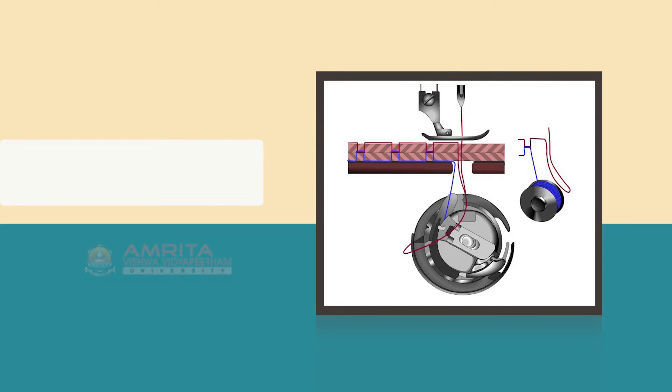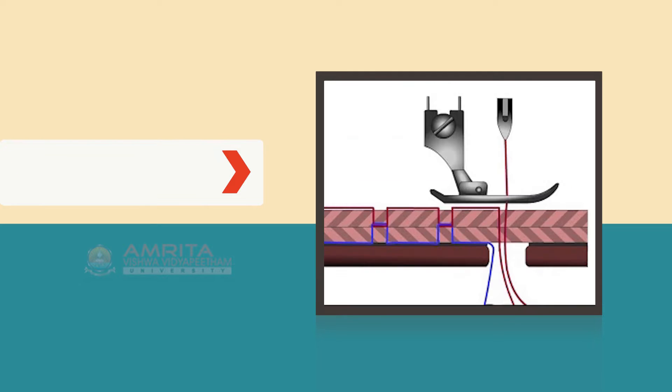Objectives: At the end of the lesson, you will be able to describe how stitch forms in a sewing machine and identify a balanced stitch formed from a sewing machine.